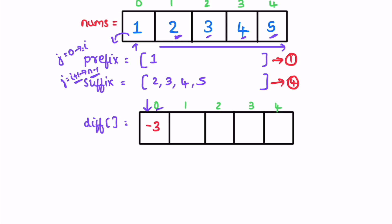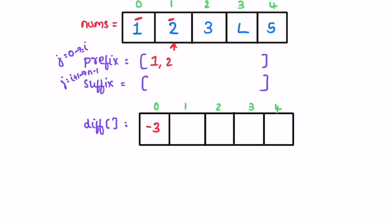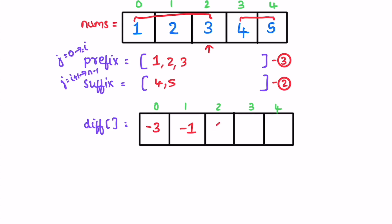Now i is pointing at one. The prefix elements are one and two, and the suffix elements are three, four, five. The length of the prefix HashSet is two, the length of the suffix HashSet is three, so two minus three is minus one — minus one is inserted at index one. Now i is pointing at two. The prefix elements are one, two, three, three — so three unique values are added to the prefix HashSet. The suffix HashSet contains four and five. Length of prefix is three, length of suffix is two, so the difference is 3 minus 2, which is one — one is added to difference at index two.